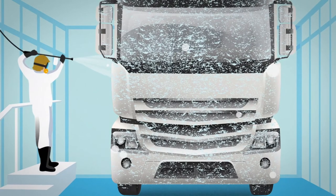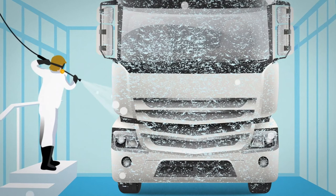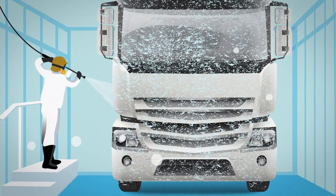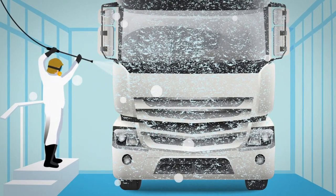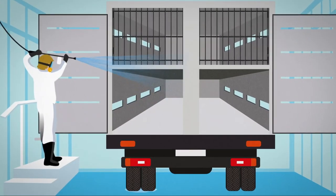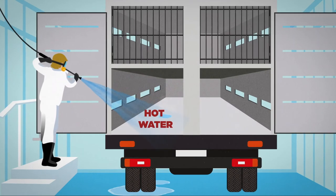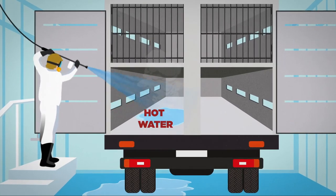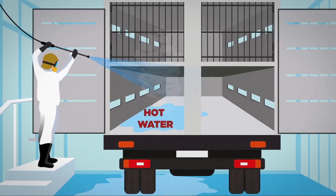Use the foamer to apply detergent according to label directions to all interior surfaces. Do not let the detergent dry. Start from the top and proceed down with high-pressure hot water to wash the exterior of the trailer and tractor first, then the trailer interior.